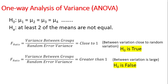The test statistic used to answer this hypothesis is the F-ratio, which is the variance between groups divided by the random error variance. If the F-ratio is close to one, you can conclude that your null hypothesis is true. If your F-ratio is much greater than one, you conclude that your null hypothesis is false — you reject it and accept the alternate hypothesis.